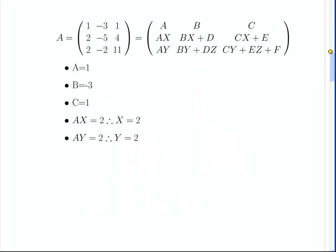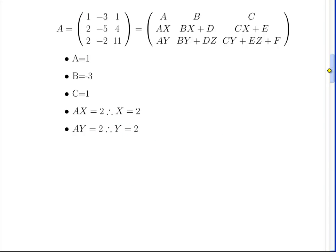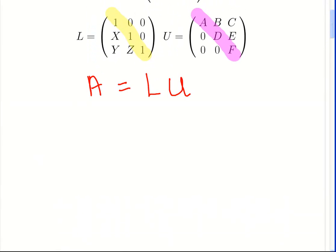So if we multiply out L times U, the top row is simply going to be A, B, and C. Looking at the top row of L, which is 1, 0, 0, and multiplying by each of the columns, we get A, B, and C. This is straightforward matrix multiplication.